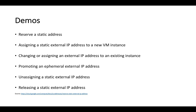Now we're going to get to the demos — pretty simple, very short demos. We'll look at how to reserve a static IP address, assign it to a resource, change the assignment, promote an existing ephemeral IP address to a static one, unassign the static IP address from a resource, and finally how to release the external IP address. We'll go through all these exercises from the console.